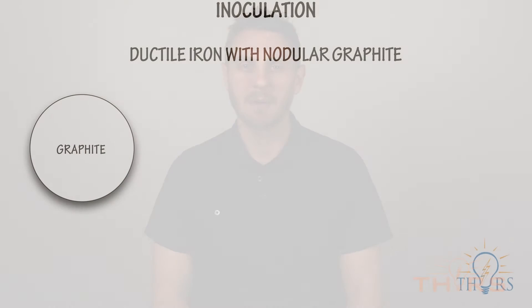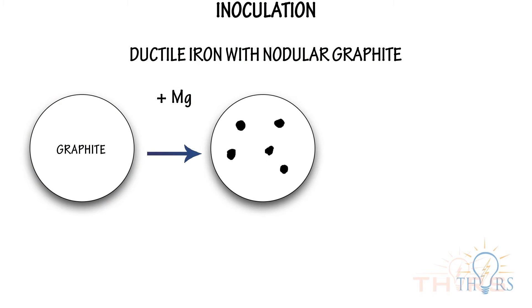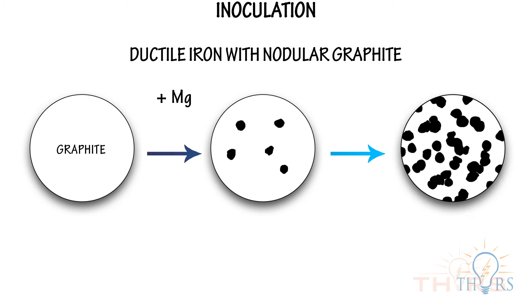There are several steps involved in creating ductile iron with nodular graphite, and one of the most important is inoculation. Inoculation for ductile irons is the process of adding ferrosilicon alloys to the molten metal. The ferrosilicon provides nucleation sites on which the graphite can precipitate and grow. Inoculation also ensures that the nodules are spherical and that there are plenty of them in the matrix.